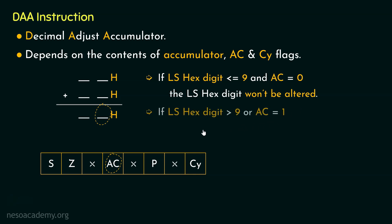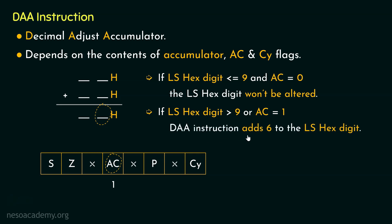If the least significant hexadecimal digit is greater than 9, or if it is less than 9 but the auxiliary carry has been generated (auxiliary carry flag set to 1), then the result is invalid BCD and a correction is needed. The DAA instruction will add 6 — the correction value — to the least significant hexadecimal digit. However, this may generate a carry that increments the most significant hexadecimal digit, so we must then also evaluate the most significant digit.